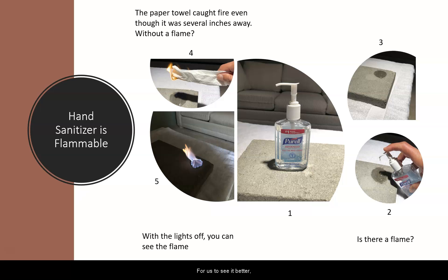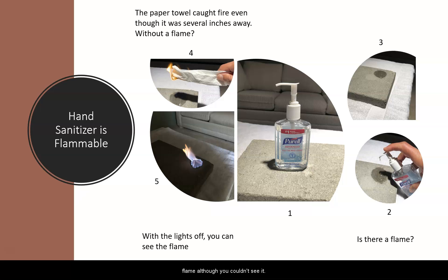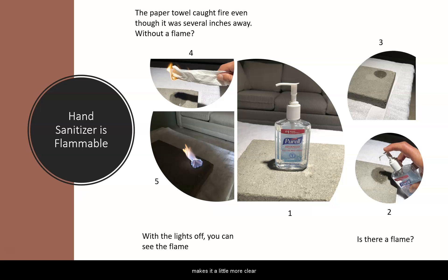To see it better, we turned the lights off, and in picture number 5 you can actually now see the flame. Although you couldn't see it in picture number 3, in picture number 5 when it's a little bit darker, it makes it more clear to see the flame. We looked at it and admired all of the colors — the pretty blue and purple, and the orange and the yellow.